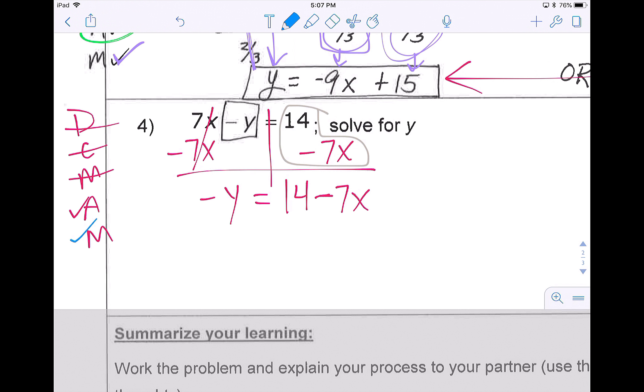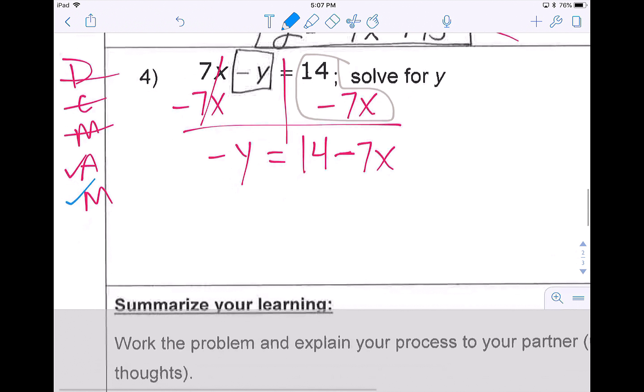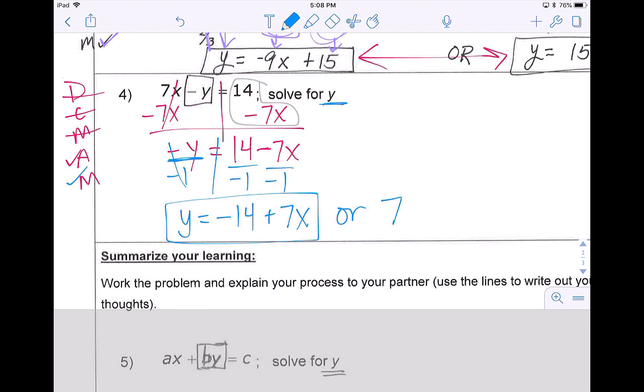From here, I do need to multiply or divide because I don't have y by itself. I have negative y. So in order to get rid of that negative, I divide every piece on every side by negative 1. So y equals 14 divided by negative 1 is negative 14. Negative 7x divided by negative 1 is a positive 7x. And remember, order doesn't matter, so you could also write it as 7x minus 14. The preference is up to you.